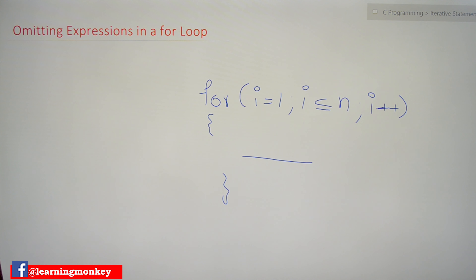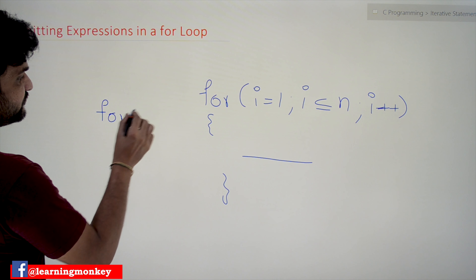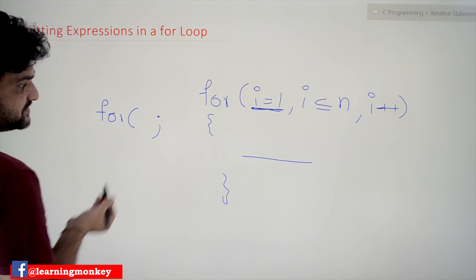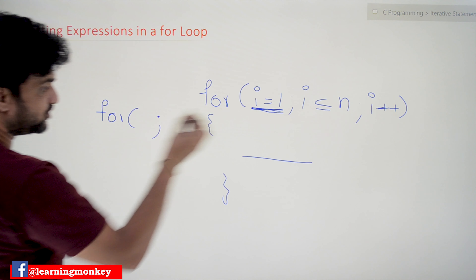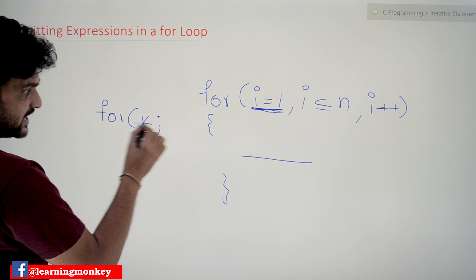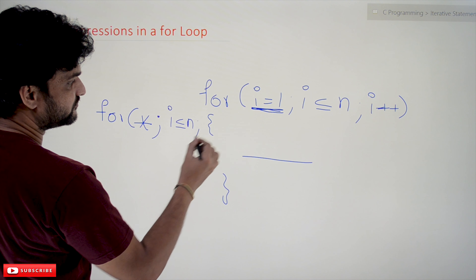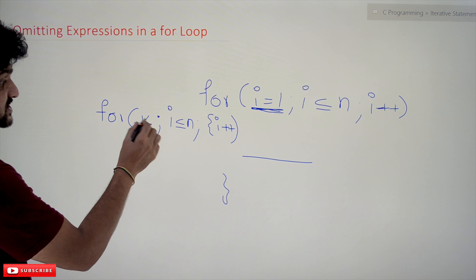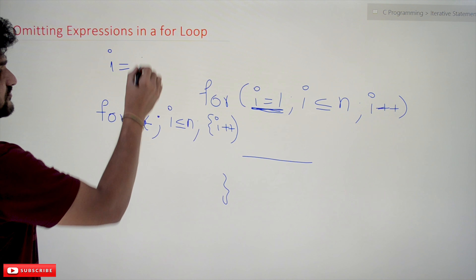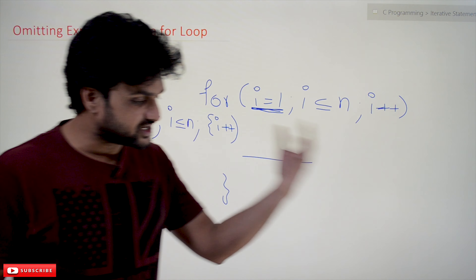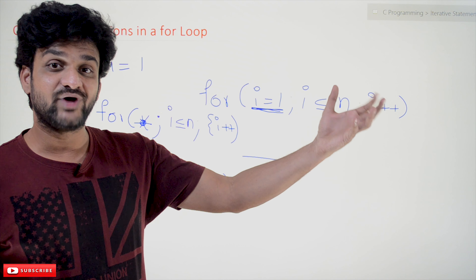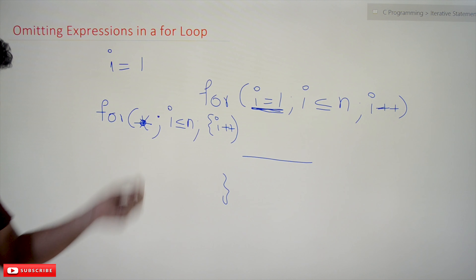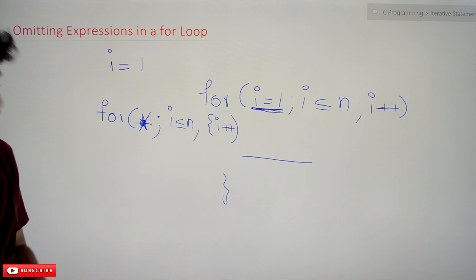So this for loop can be written in many different ways. One way is that we can omit the initialization expression. Omitting means we have to give the semicolon — that expression is just omitted. After that we can still give i <= n and i++. This is used when the initialization has already been done in the declaration part — if you want to assign the variable at declaration, that can be done there and then omitted inside the for loop.